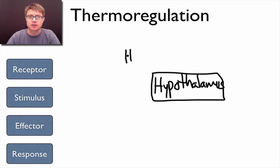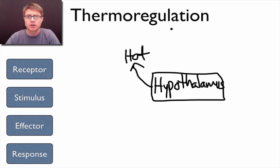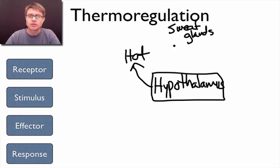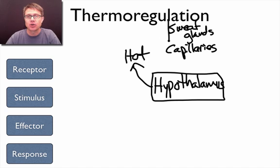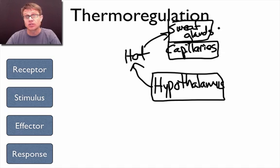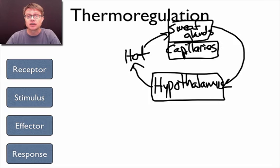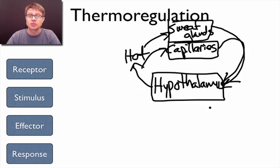Let's say the stimulus is that the hypothalamus is getting too hot. What are some effectors we could put at the top? Well, one example would be sweat glands, and another would be capillaries. If the temperature goes too high, the sweat glands are going to sweat, and through evaporative cooling that's going to lower our temperature. What are the capillaries going to do? If it gets too hot they're going to dilate, so there's more blood going by the surface of your body, releasing more heat and lowering our temperature.